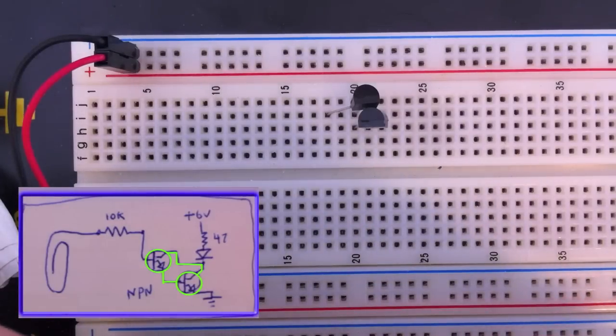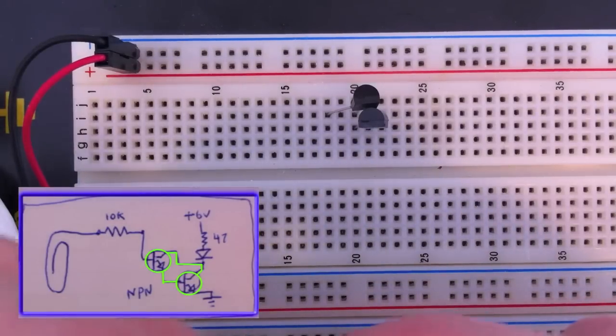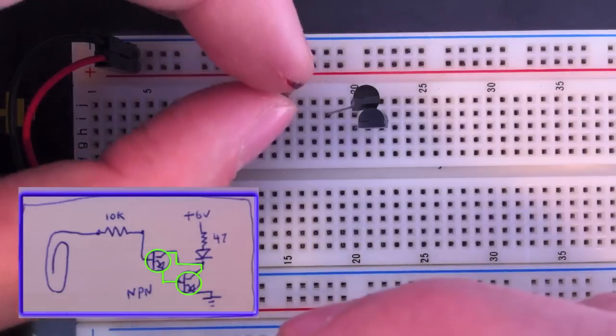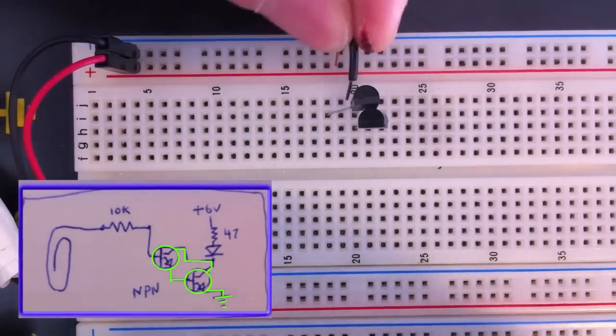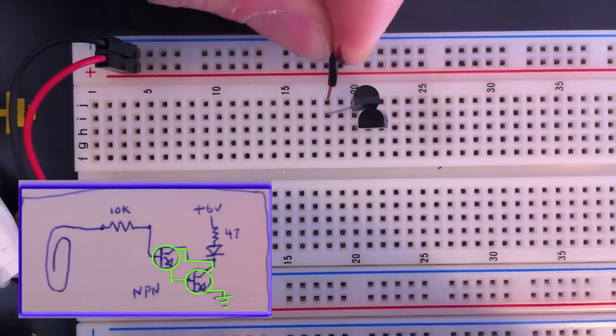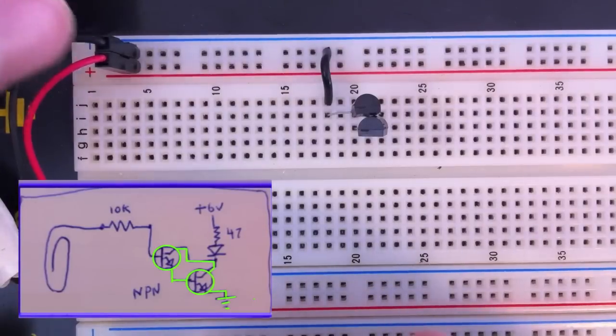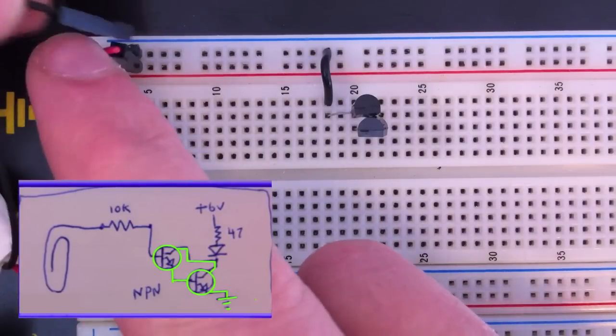Now we'll connect the emitter of the second transistor to ground. This is going to de-energize the circuit.